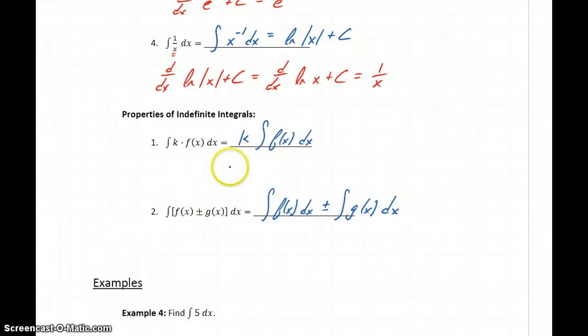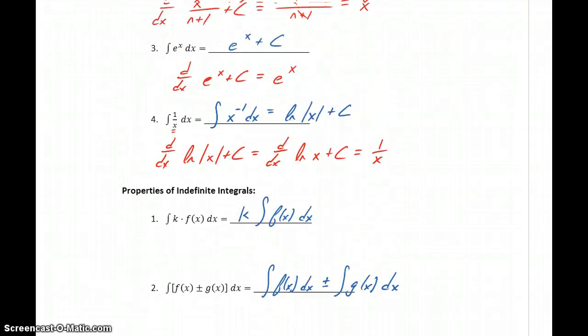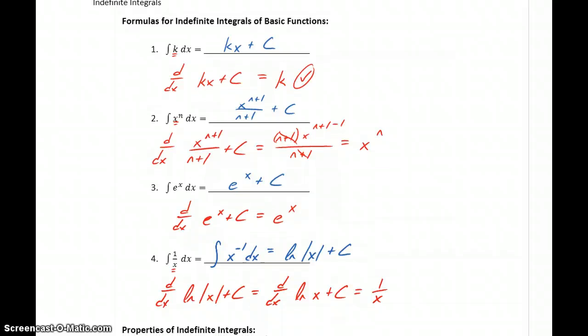So we can break some more complicated expressions down to make them a little more manageable. We can integrate term by term, we can ignore any constant multiples and just look at integrating that function by itself, and then use any of those shortcuts we've established here to find integrals directly.